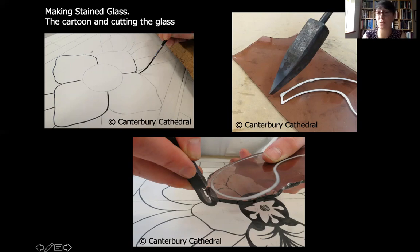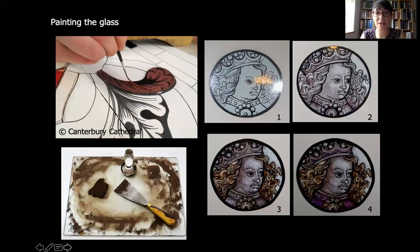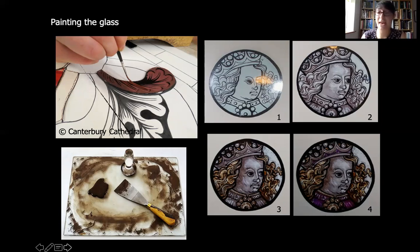Nowadays of course we have wheel cutters which are much easier to use, but this is how glass was cut in the medieval period. When your pieces of glass are cut, you will assemble them back onto the drawing. This is where, if you're adding paint to the window, you will start to paint on the glass. You can see that the shape being cut is actually a leaf, and it's the paint applied to the top of the glass that makes it look like a leaf. Paint is very important - it gives a lot of the detail to stained glass. The paint mix is an iron or copper oxide mixed with ground up glass.